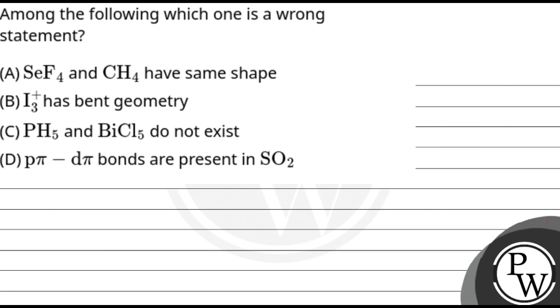The question is which one is a wrong statement. First of all, let's look at the shape. This is the key concept. We are talking about the shape. In case of shape, we need structure and bond pair and lone pair. If bond pair and lone pair are same, then we are talking about the same shape.